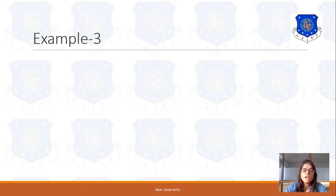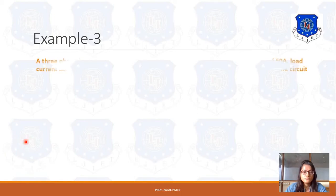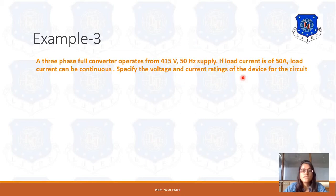In the earlier session, we discussed about two examples of Full Converter. Now let's take another example related to Full Converter. Consider this problem statement: A 3-Phase Full Converter operates from 415V and 50Hz supply. If load current is 50A and load current can be continuous, specify the voltage and current rating of the device for the circuit.